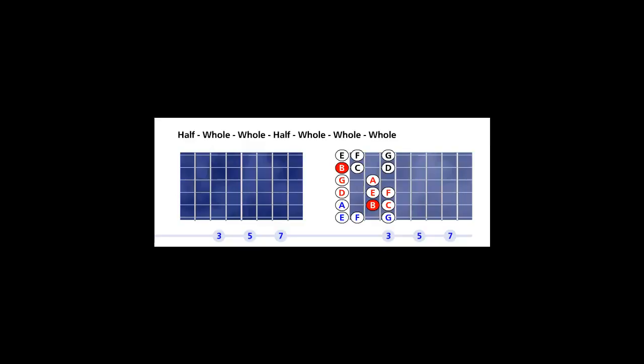Let's turn the note on. The Locrian Mode 7 formula is a half, a whole, a whole, a half, a whole, a whole, and a whole.